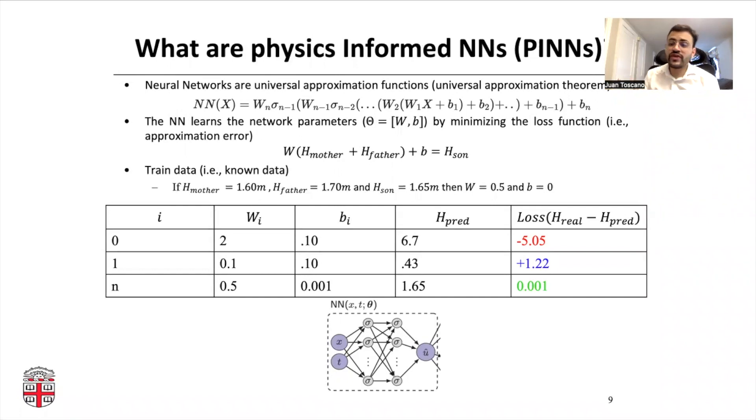To fit the data, we will try to find these w's and these b's that are referred to as network parameters. The network will learn these network parameters by minimizing a loss function in a trial and error process. This loss function is nothing more than the approximation error.